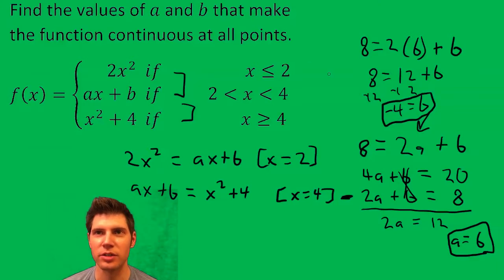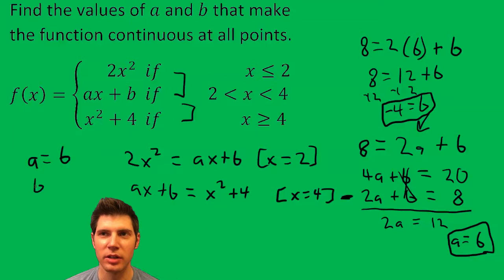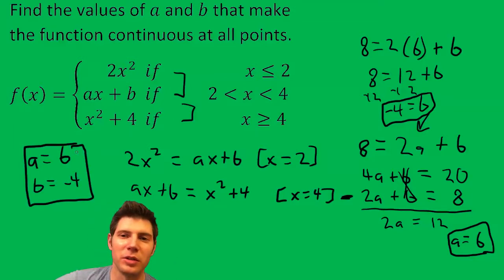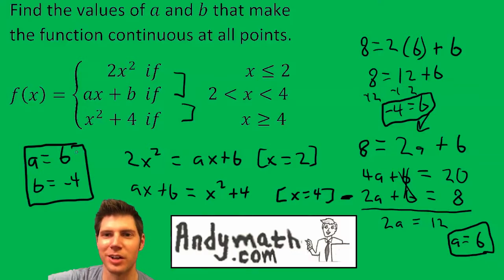So now the answer is a equals six and b equals negative four. This is definitely more difficult than most classes will have, but hopefully for those of you who need it, this makes sense. Please like and subscribe and check out more videos from andymath.com.